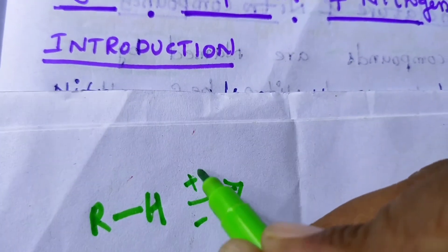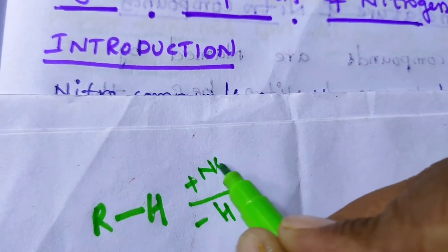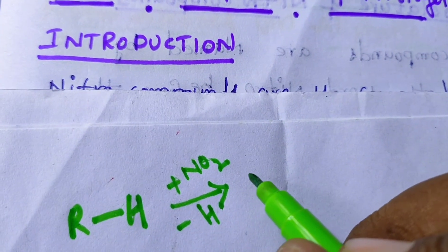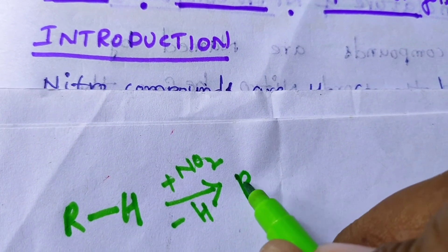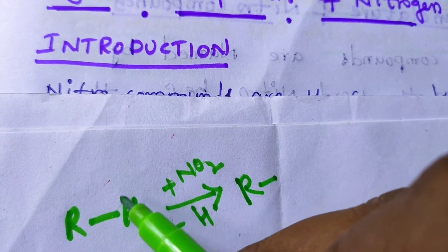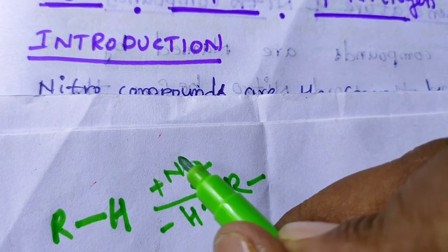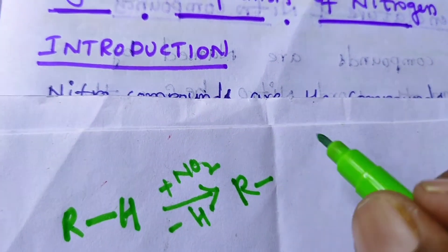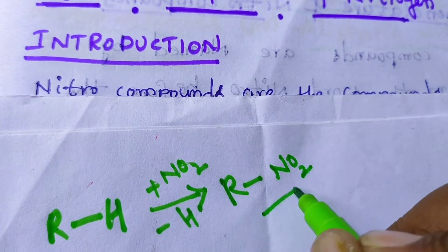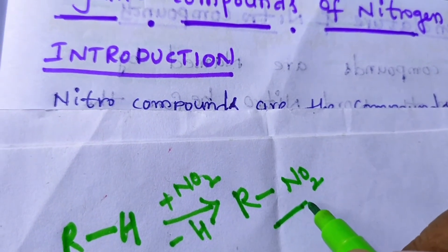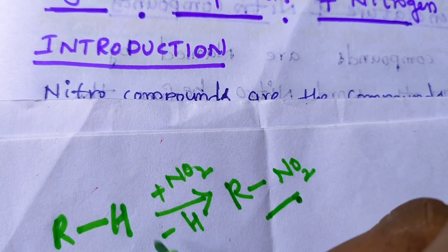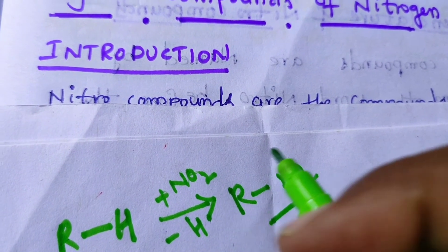I am adding the NO₂ group. So we get R-NO₂. In place of H, I am adding this NO₂. This is the compound. So, one hydrogen of the alkane is replaced by the nitro group.